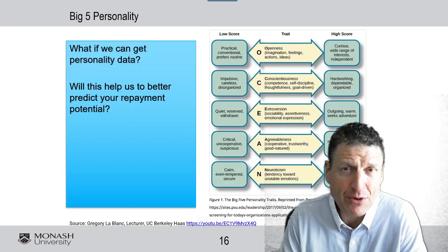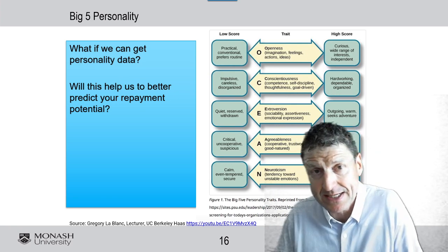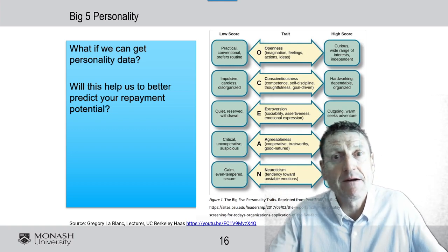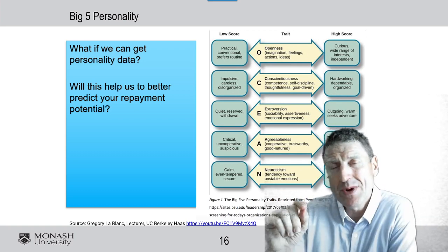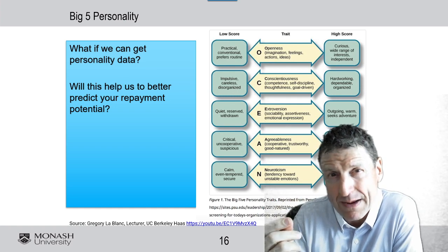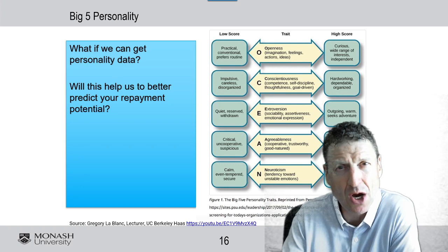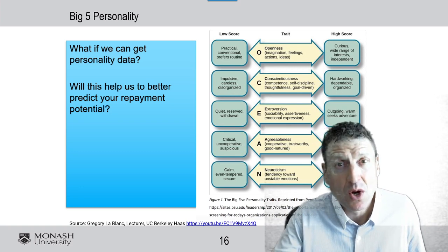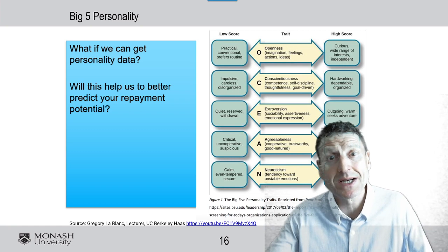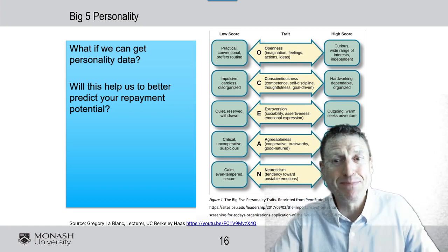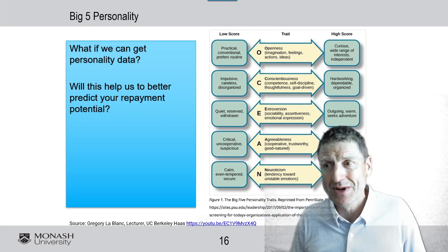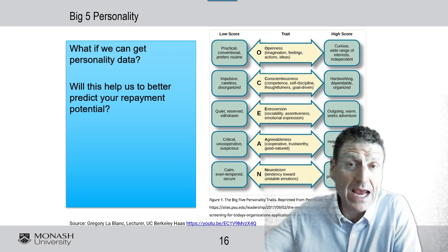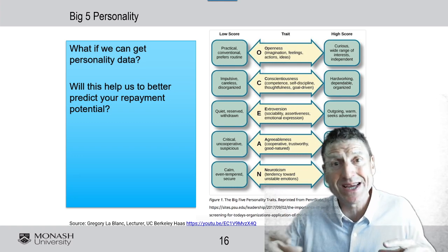Here is the big area where banks and fintechs have really focused — to truly understand your ability to repay. It gets back to the Big Five personality. If we can improve the quality of our lending decision based on some personality trait of yours, and find out what your personality is, then we can improve the quality of our lending. This would help us better predict your repayment potential. The Big Five personality is a common personality test where we look at five big areas of your personality that we can score everyone on.